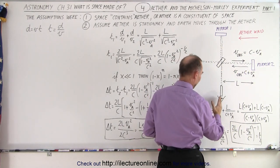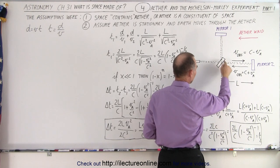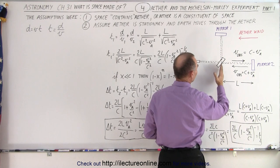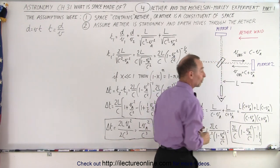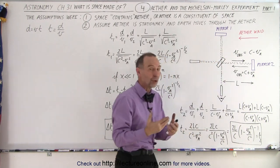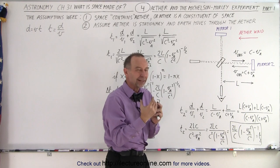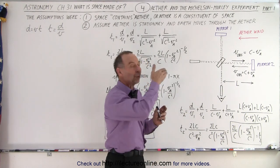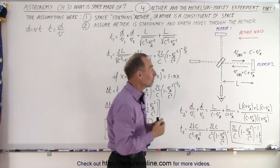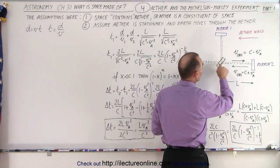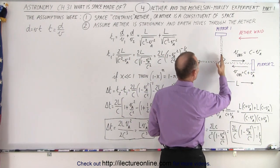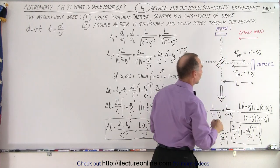We have a beam of light being emitted right here. There's a kind of mirror here that allows transmission of some light and also reflects some of the light — it's kind of like a piece of glass — so some of the light will be reflected to go to mirror two, and some of it will be transmitted to go to mirror one.